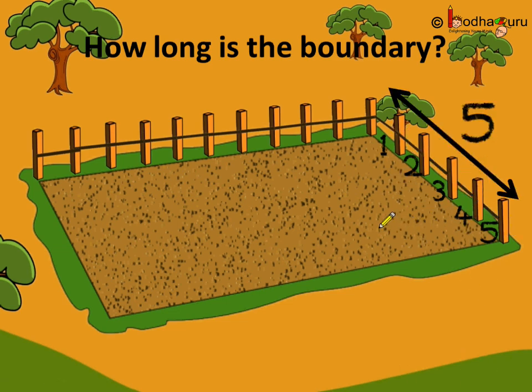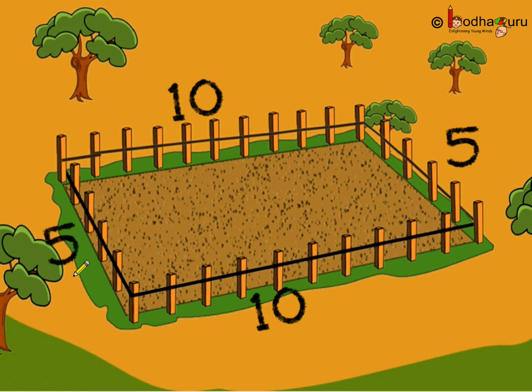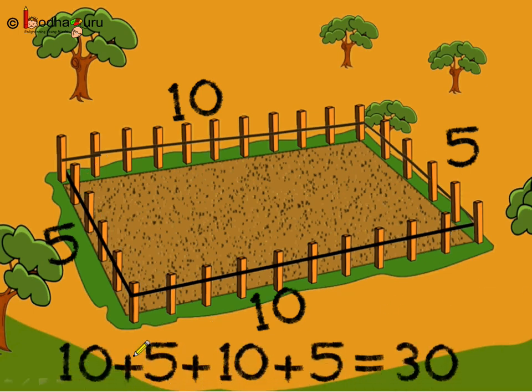Same way he filled all the sides and what do we see? Here he used 10 pieces of wire. This side he used 5 pieces of wire. This side again 10 and this side again 5 pieces. This means this farm is rectangular in shape. So what is the total number of pieces used to fence this farm? It is 10 plus 5 plus 10 plus 5 and it is equal to 30 pieces.